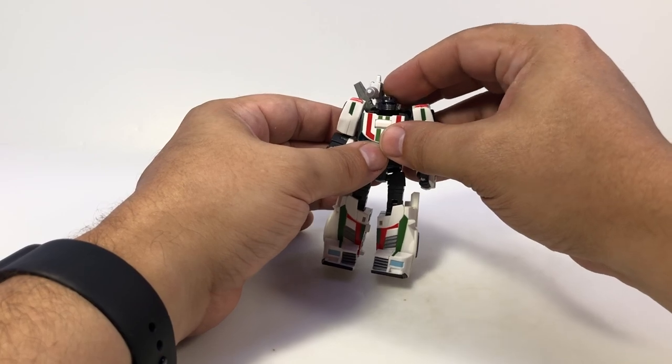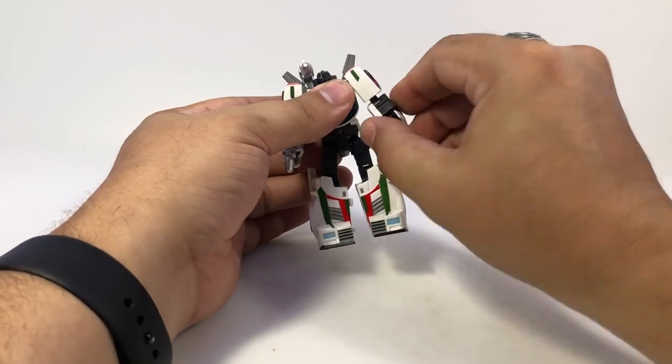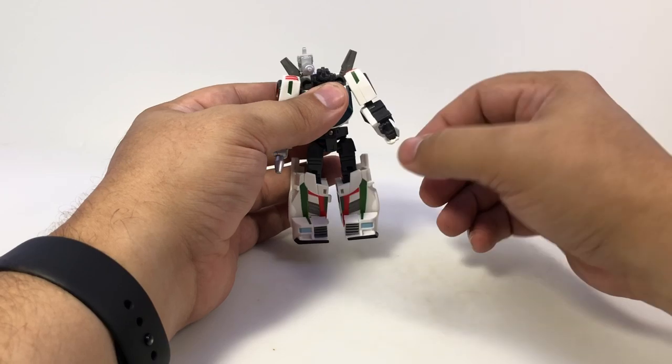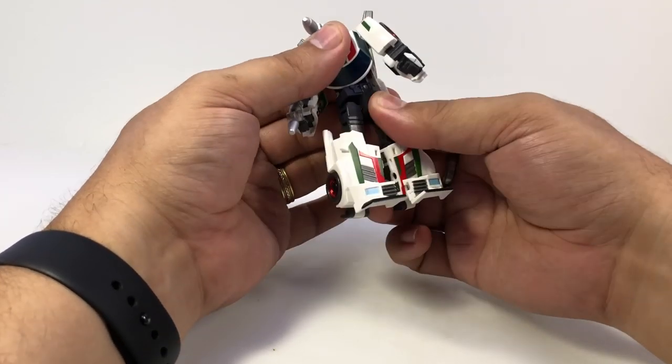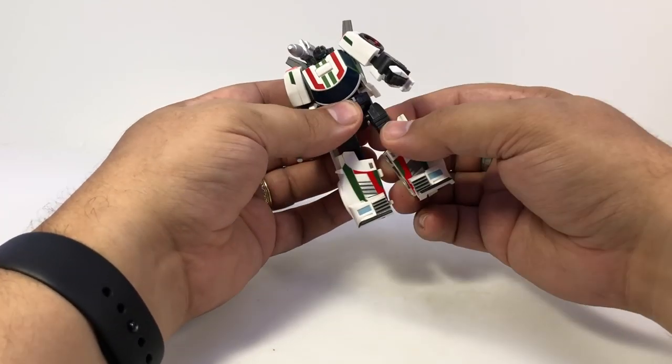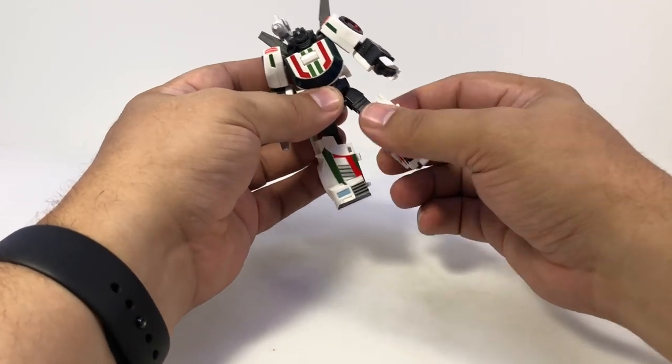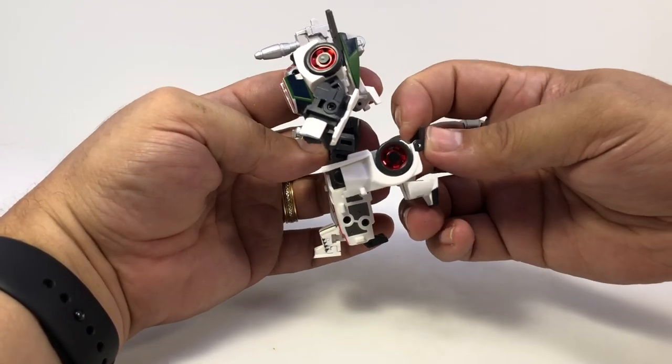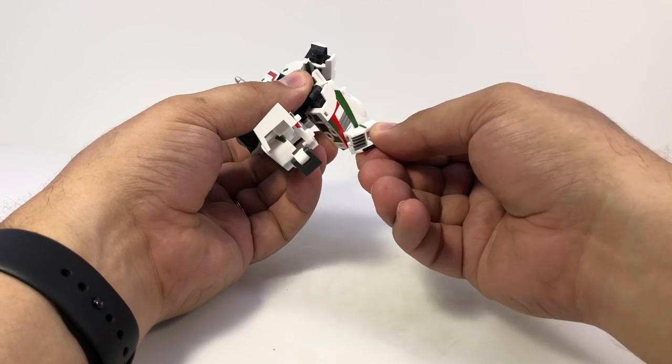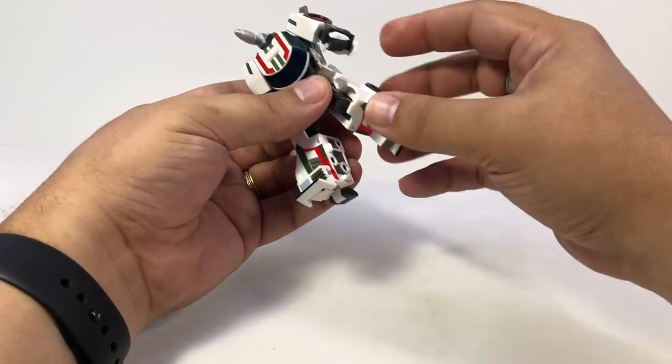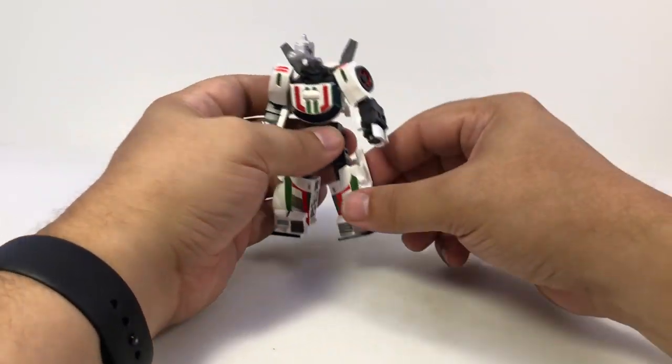He's got a ball joint at the head, ball joint shoulders, swivel biceps, single hinge elbow, wrist swivel. He's got a waist swivel, ball joint hips and a thigh swivel, decent knees. He's got a heel and a toe piece. Toe piece rotates for ankle tilt and can be posed. So between that and the heel you can get him in some pretty solid stances however you want to do it.